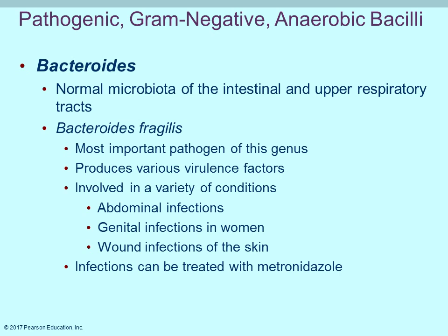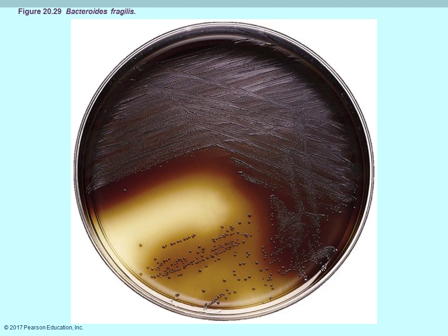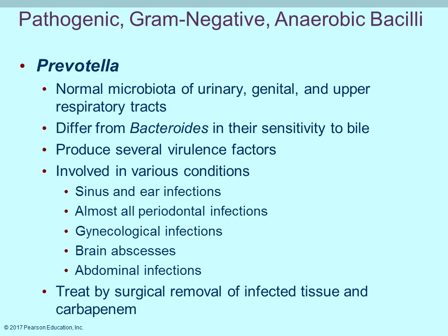Bacteroides are normally found in the intestines and upper respiratory tract, but placing them in the wrong location causes problems — genital infections in women, wound infections on the skin, and abdominal infections. Prevotella is similarly normal in certain areas but causes infection when displaced. Treatment involves removing infected tissue.